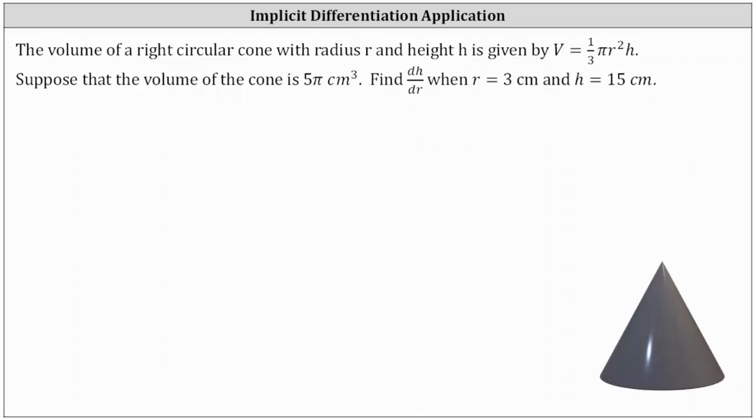The volume of a right circular cone with radius r and height h is given by V equals one-third π r squared h. Suppose that the volume of the cone is 5π cubic centimeters. We're asked to find dh/dr when r equals 3 centimeters and h equals 15 centimeters.